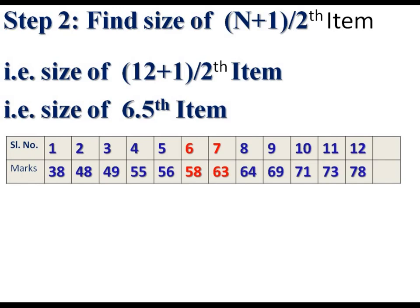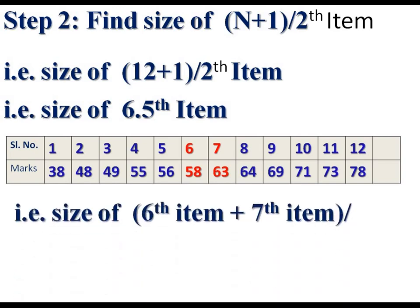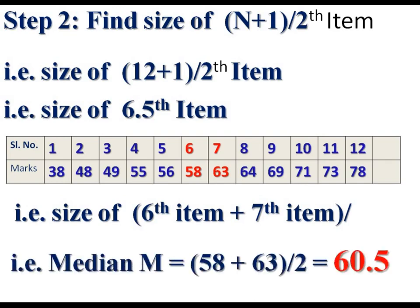The 6.5th item equals (6th item + 7th item) divided by 2.